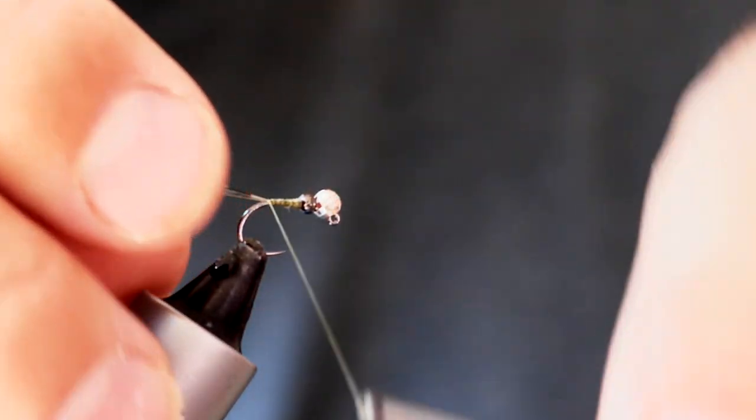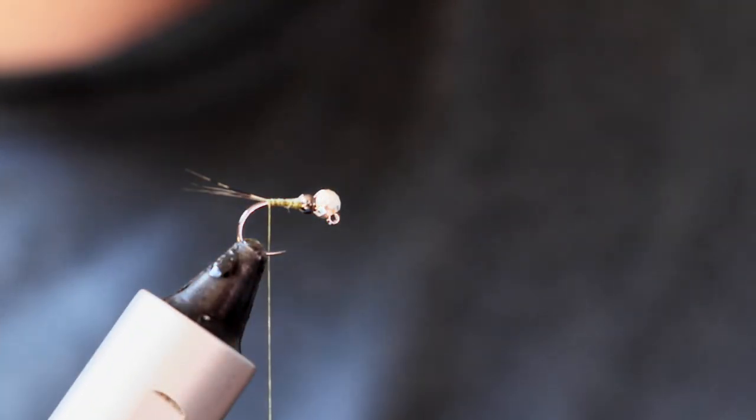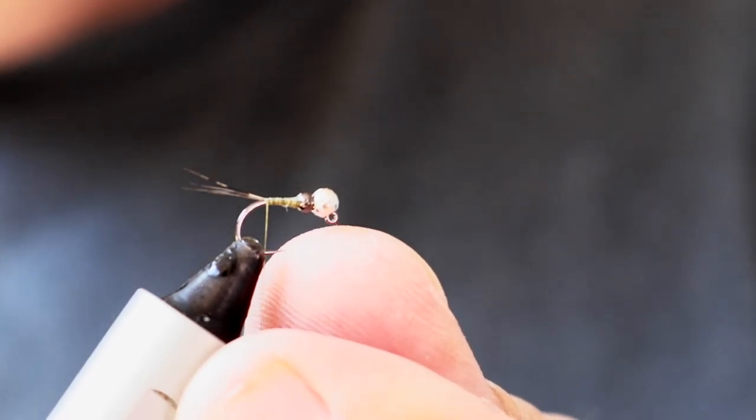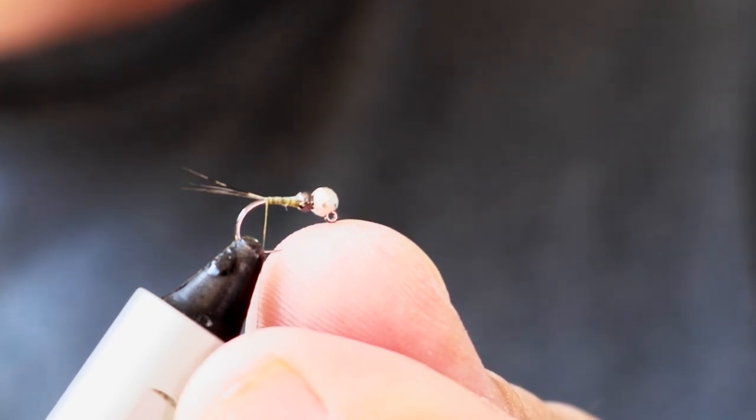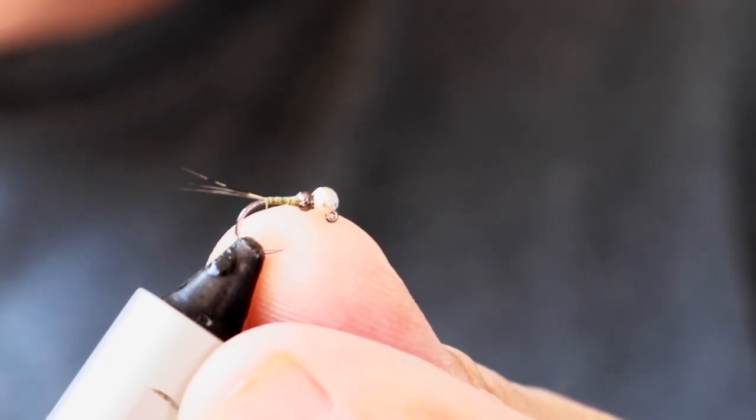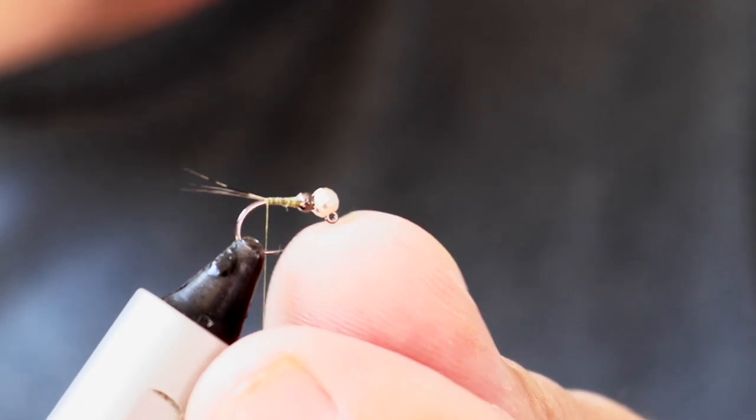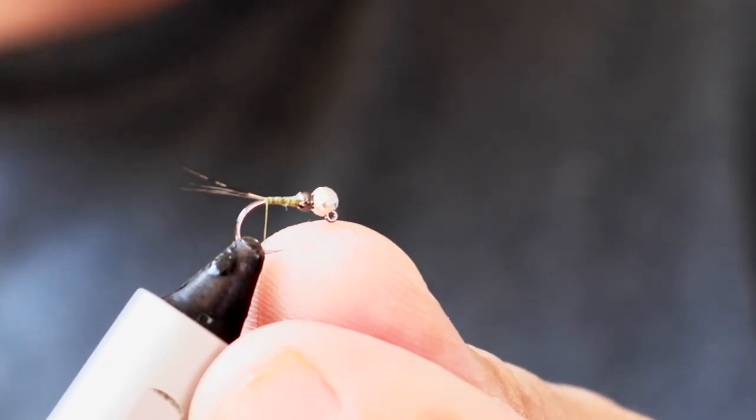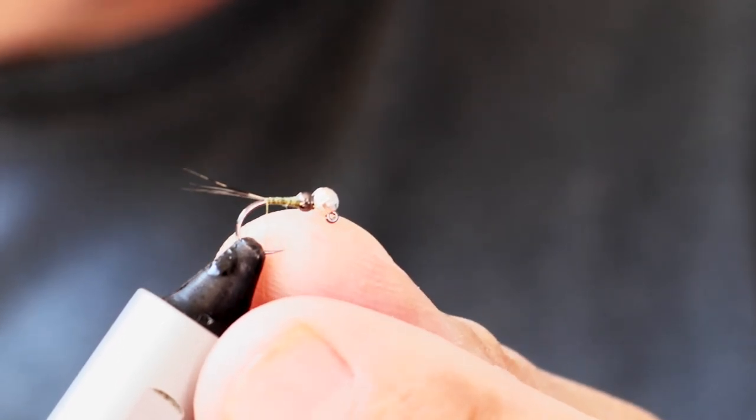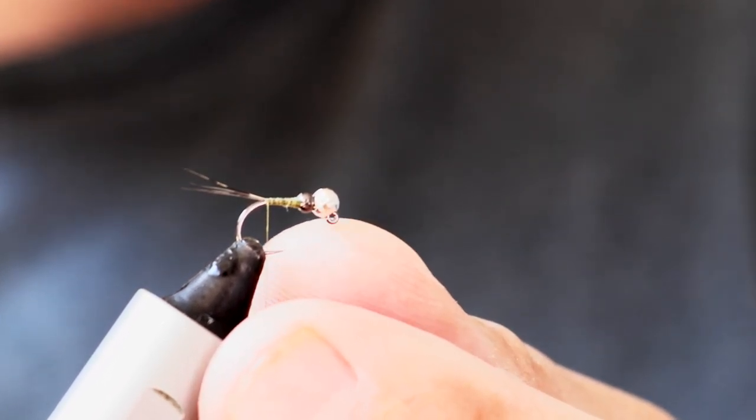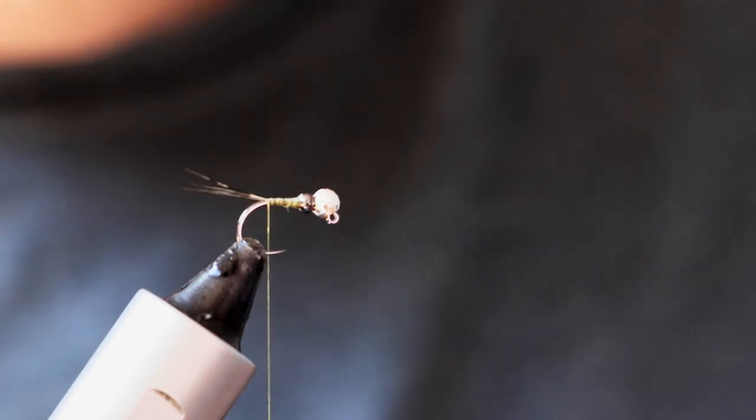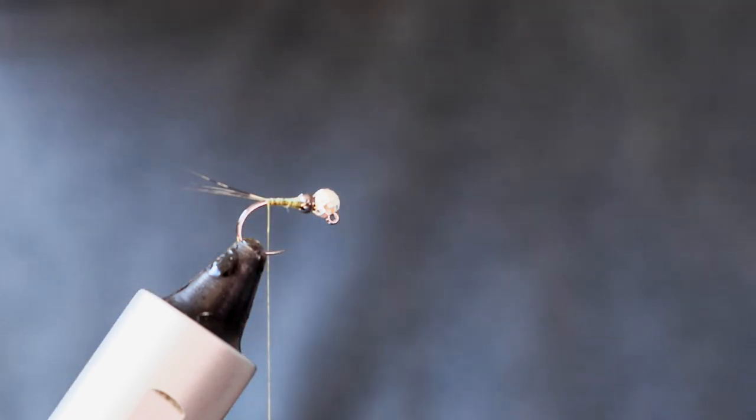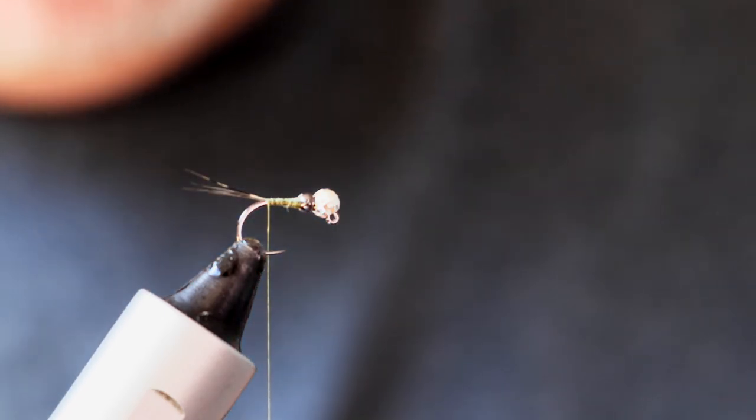I've tied so many of these things I can do it in my sleep pretty much. I do tie it in smaller sizes in the 18 and even 20, and when I do that, rather than using a 3 millimeter tungsten disco bead and a 2mm plain tungsten, I'll use a 2.5mm and a 1.5mm tungsten bead. You can get all of those from Tungsten Beads Plus or one or two other places.